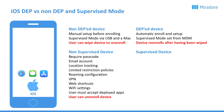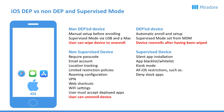With a supervised device, you get fully silent app installation. You get access to app blacklists and whitelists. You get access to kiosk mode. You get access to all the iOS restrictions, such as denying some of the stock apps from Apple, denying access to the App Store, installing or removing apps. You can deny account modification, so the user cannot go in and add their own email account. You can deny the user from erasing or restoring the phone.